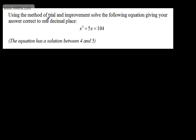In this video, we're going to look at solving equations using trial and improvement. We might use trial and improvement if we don't have a technique to solve the equation we're given. We're going to start off with a fairly straightforward case. The question says, using the method of trial and improvement, solve the following equation giving your answer correct to one decimal place. We have x cubed plus 5x equals 104, and the equation has a solution between 4 and 5, which gives us a starting point.